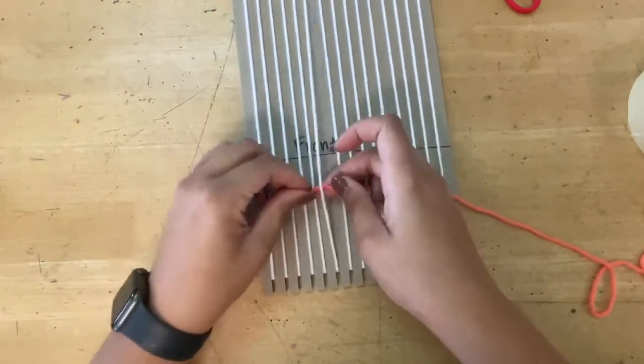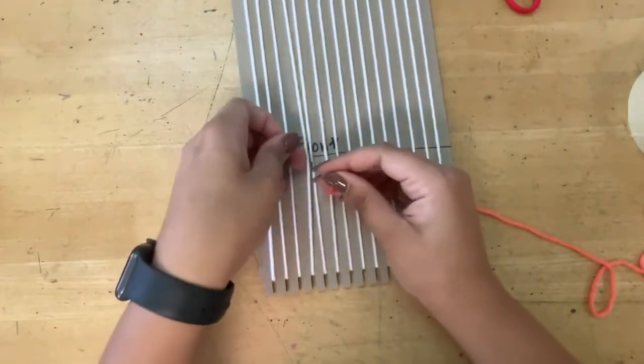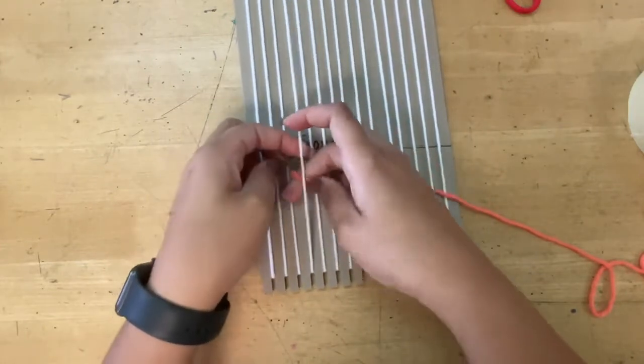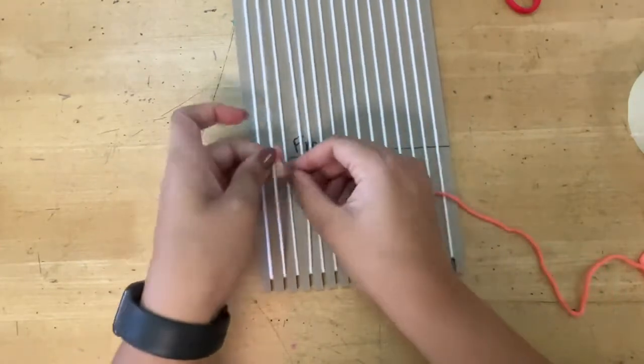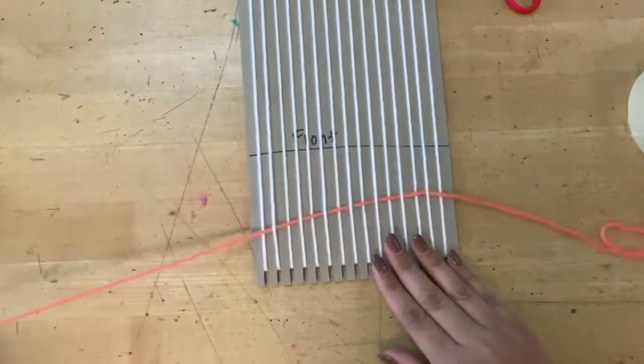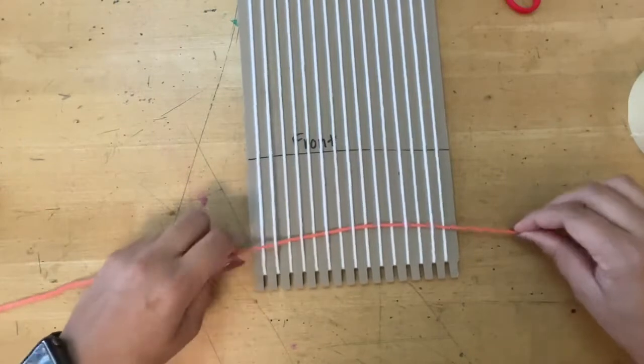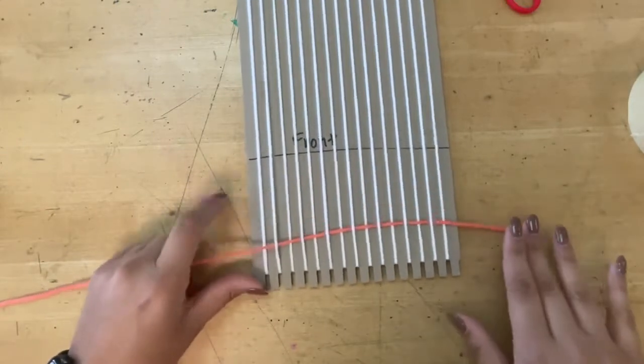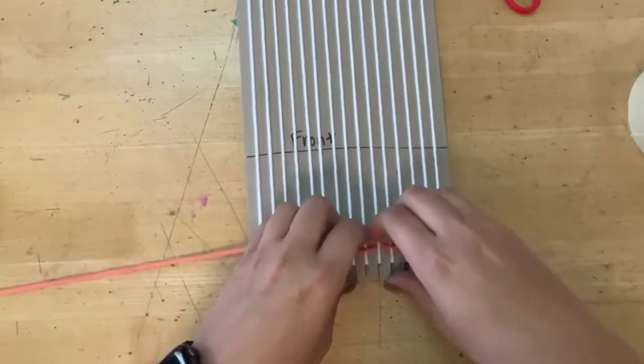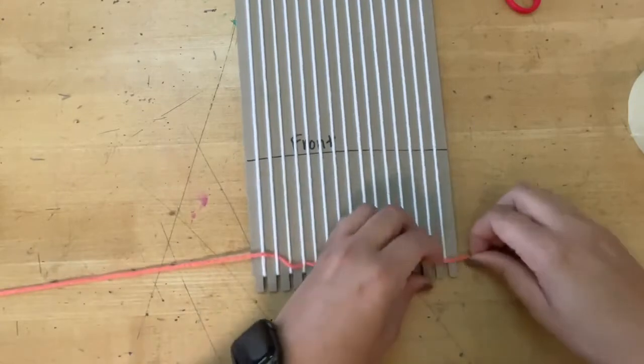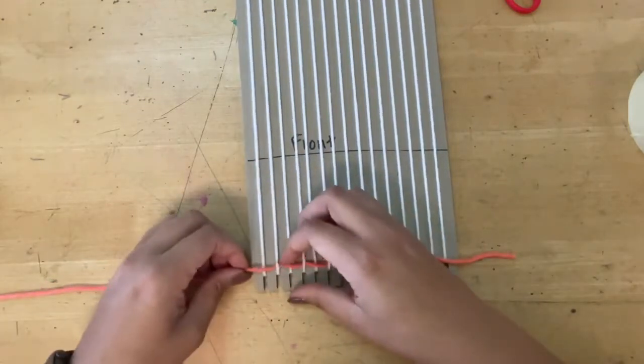What I like to do is I like to pick up every other string so I know which one I am going under. This helps me weave a little bit faster. Next, what we want to do is pull the string so that the other end of the string is over here, just dangling off. Then we push it down.